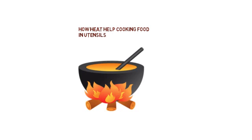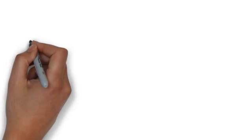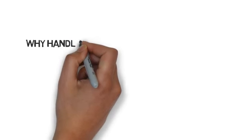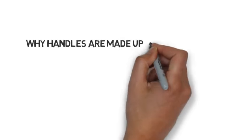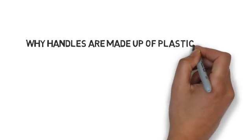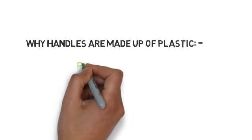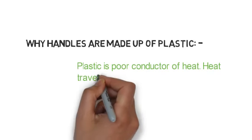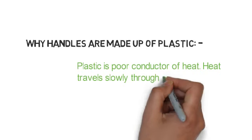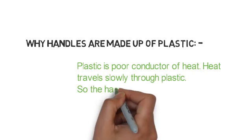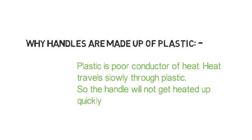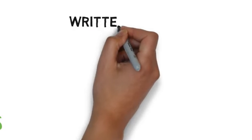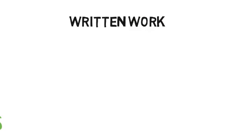Metals allow heat to travel quickly, which allows food to heat up and cook quickly in utensils. Plastic is a poor conductor of heat — heat travels slowly through plastic, so handles made of plastic will not get heated up quickly.